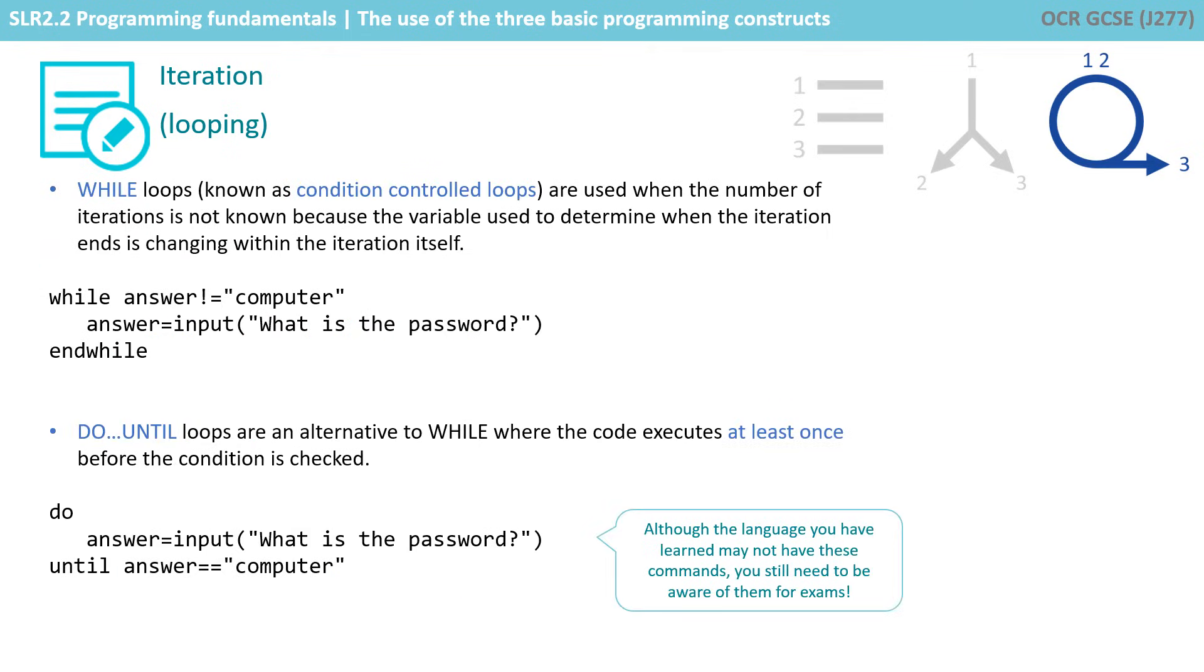Another form of iteration or looping you may be aware of is the while loop. These are known as condition controlled loops. They're used when the number of iterations is not known, because the variable used to determine when the iteration ends is changing, often within the iteration itself.